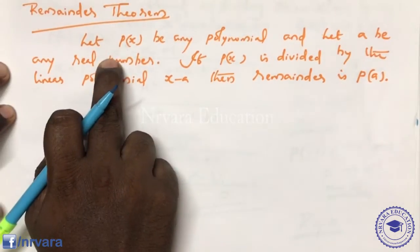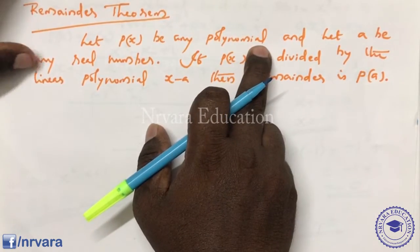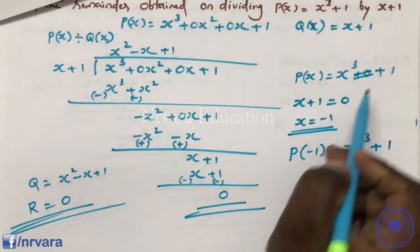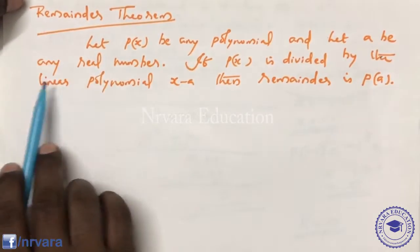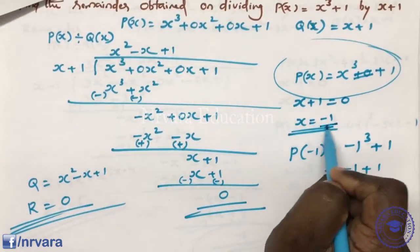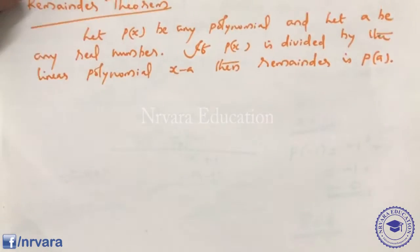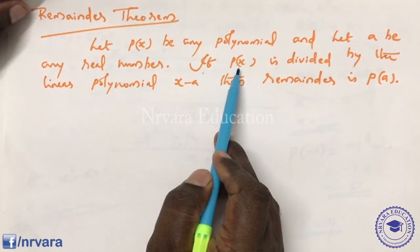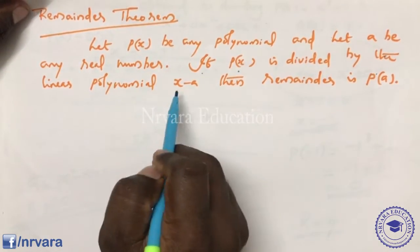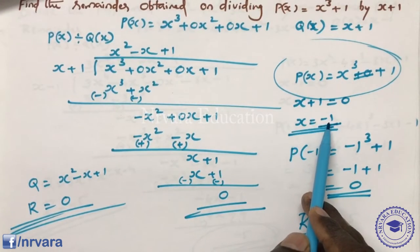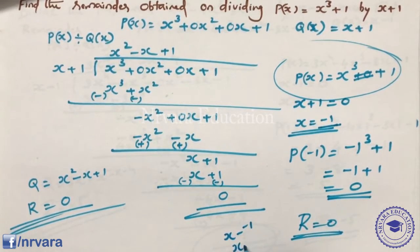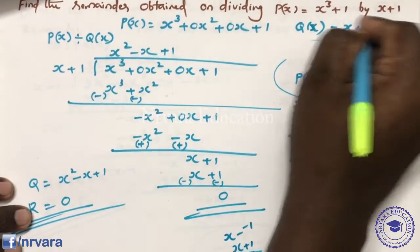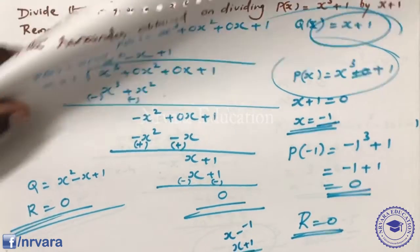Okay, let P of x be any polynomial. Let A be any real number. If P of x is divided by the linear polynomial x minus A, the remainder is P of A. Here x minus A — for example x minus minus 1 is x plus 1, and the value A equals minus 1.